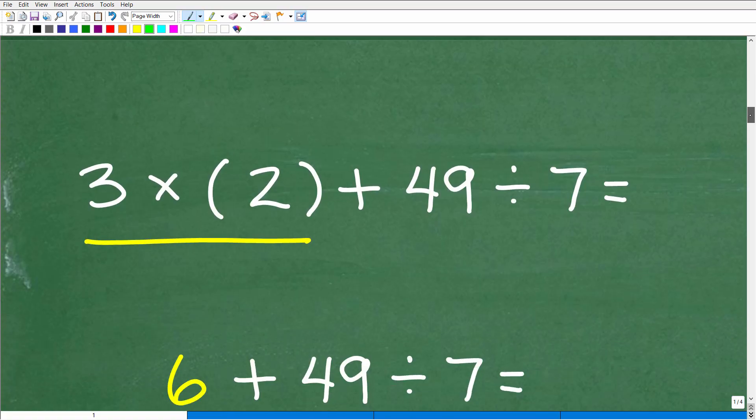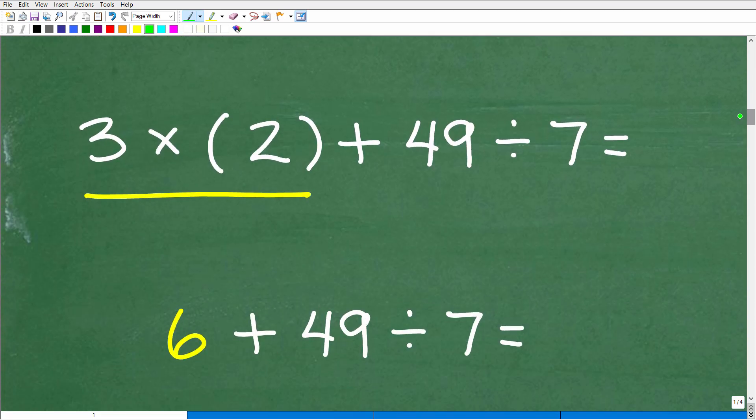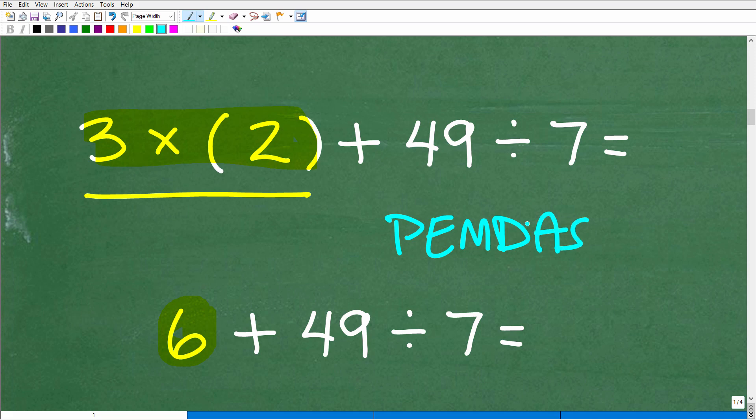But for those of you that are first learning the order of operations, just strictly follow this checklist. Okay, so this is what we're going to do next, 3 times 2. So 3 times 2 is what, I mean, this is super easy. This is 6. So now we're down to 6 plus 49 divided by 7. All right, so this is hopefully pretty easy to decide what's the next thing. So we have our PEMDAS. We did everything in parentheses. There's no powers. We did our multiplication. Do we have any more multiplication or division? Yes, we do. So this is what we're going to do next. And then we'll finish up with addition.